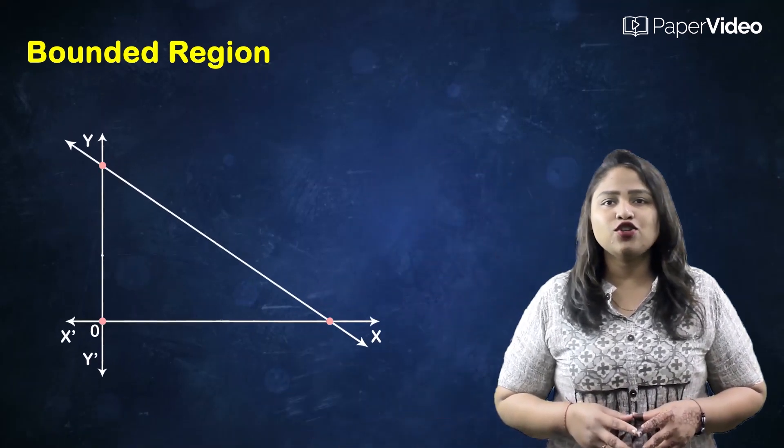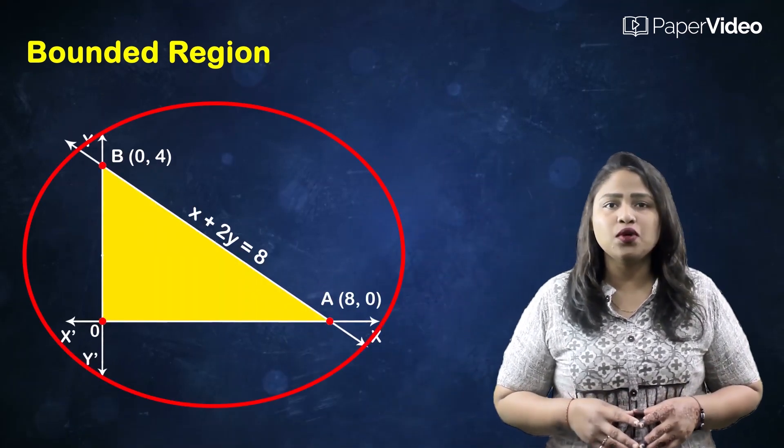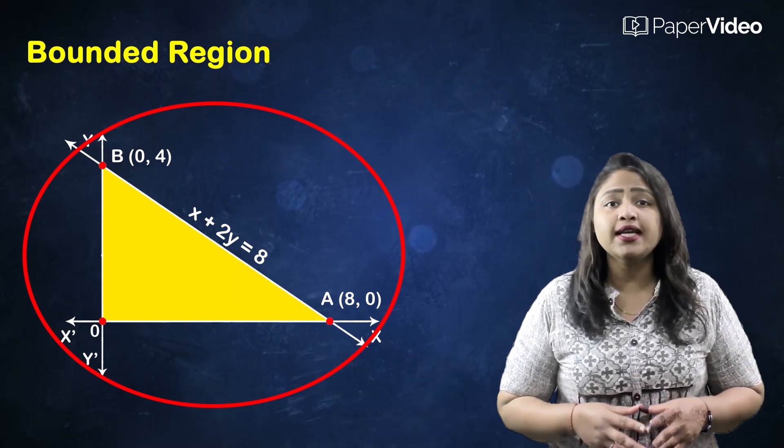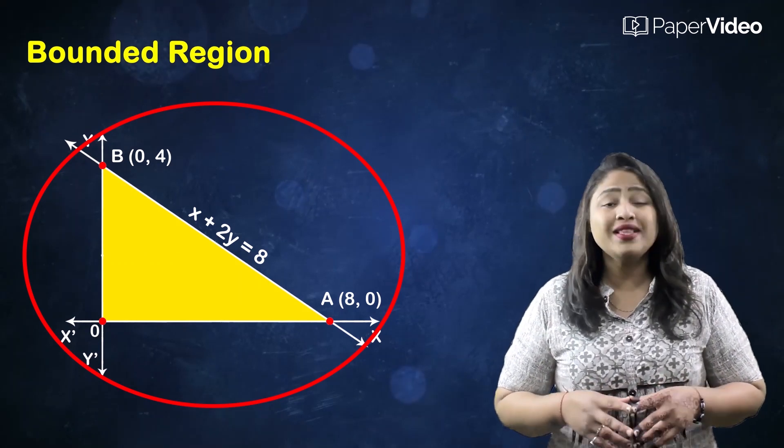First, we have a bounded region. A feasible region of a system of linear inequalities is said to be bounded if it can be enclosed within a circle.